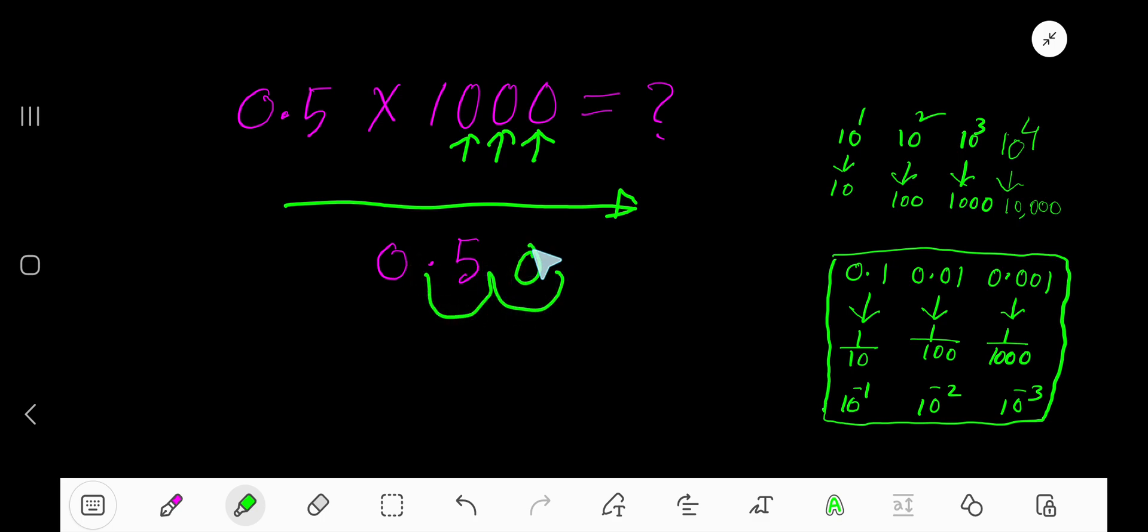1 place, 2 places, placeholder 0, 3 places, placeholder 0. So we are getting here 0 point - we are getting here 0, then 500, here decimal, right?